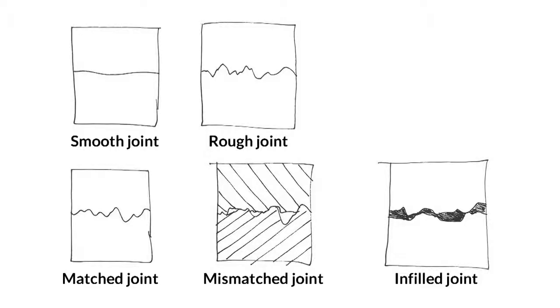As we can see on this figure, these walls can contain more or less asperities and hence be more or less rough. They can be perfectly matched or mismatched. They can be unfilled, partially or fully filled.